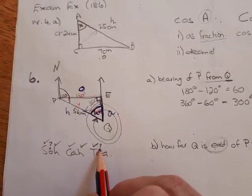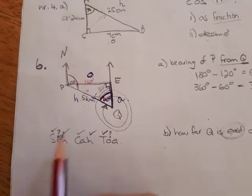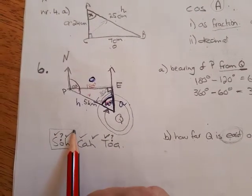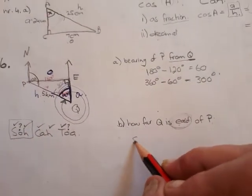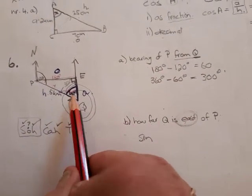So now again, you can see that this is sin. So you will have sin of 60 degrees.